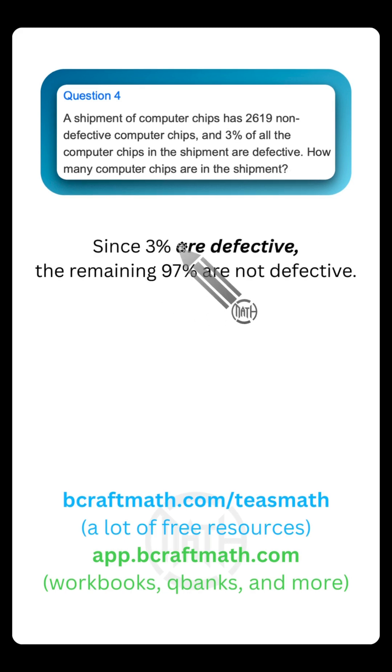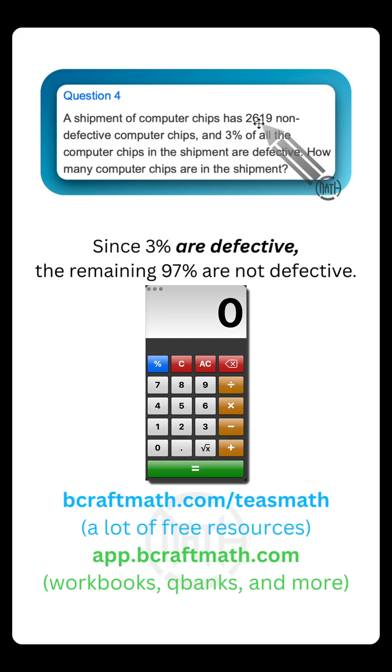Since the problem says 3% are defective, the remaining 97% are not. 100% minus 3% is 97%. Now, I'm going to show you the proportion way right here in a moment. But a quick way to find the total, if we think about the part, which is this 2619 non-defective, you do not multiply. If we divide that by 97%, which is the percentage of non-defective, there's your total right there. But most students get confused about knowing when to multiply versus when to divide. And that takes practice.